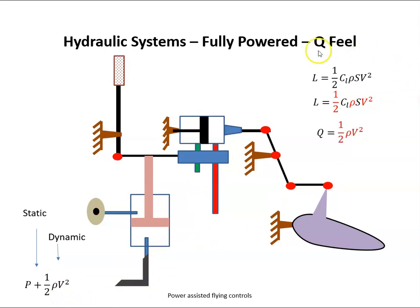Q is half rho V squared - that's where this term Q feel comes from. At high speeds, if the dynamic pressure is high, we want the pilots to be able to feel that force, to artificially feel that force.